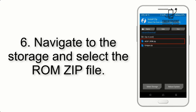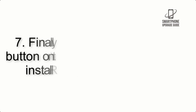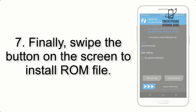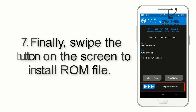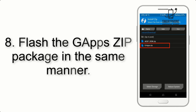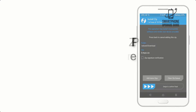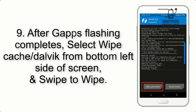Step 6: navigate to the storage and select the ROM zip file. Step 7: finally, swipe the button on the screen to install the ROM file. Step 8: flash the G apps zip package in the same manner.